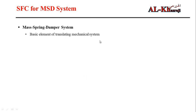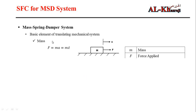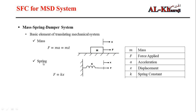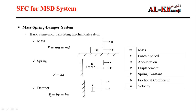Let's explain the basic elements of the translating mechanical system. The first element is the mass — the force in the mass is mass multiplied by acceleration. The second element is the spring — the force is the spring coefficient k multiplied by displacement. The third element is the damper — the force is the damping coefficient b multiplied by velocity.